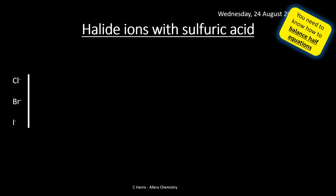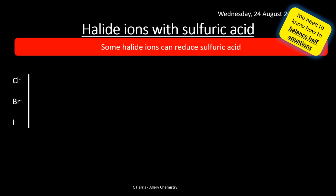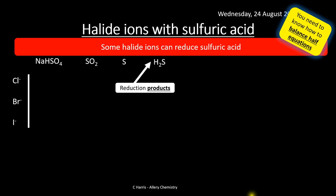Some halide ions can reduce sulfuric acid — this produces really unpleasant products and is unlikely to be done in the lab. We have chloride, bromide, and iodide ions, and along the top are the reduction products starting from sulfuric acid (H₂SO₄). The oxidation states of sulfur in those products are: +6 in H₂SO₄, +4 in SO₂, 0 in elemental sulfur, and −2 in H₂S — decreasing as sulfuric acid is increasingly reduced.